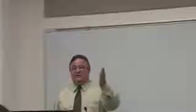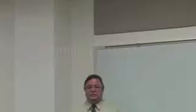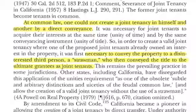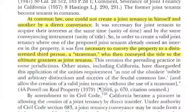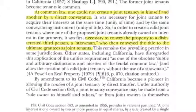Remember the rule — still the majority rule, or the prevailing view: you cannot grant a joint tenancy in yourself. There was a case in your book from California that said — the minority view — that what lawyers would do was create a straw man. They would give the property to somebody, and that somebody would then give it back to both people, creating the four unities.